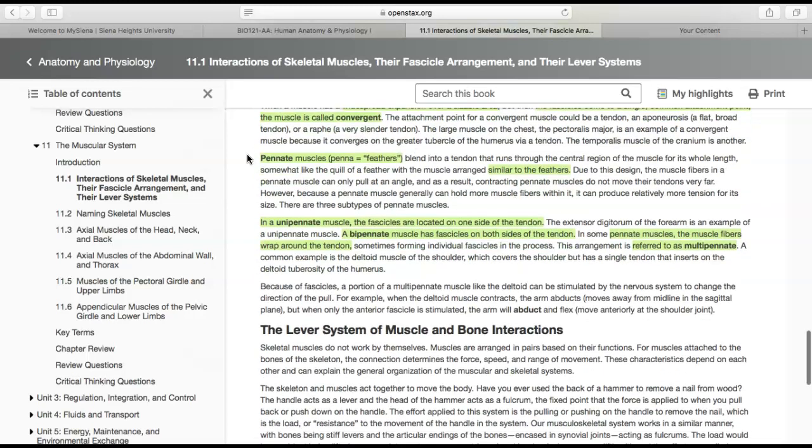The next type are pennate muscles. Penna means feathers. If you think about the structure of a feather, this is kind of the same idea. They blend into a tendon that runs through the central region of the muscle for its full length, sort of like a quill on a feather.